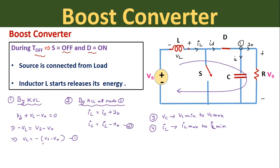Applying KVL during the OFF period gives: Vs + VL − V0 = 0, so VL = Vs − V0 (equation 1). Applying KCL at node 1 gives: iL = iC + i0, so iC = iL − i0 (equation 2). The inductor current decreases from iL_max to iL_min as it releases energy, and the capacitor voltage increases from Vc_min to Vc_max as it charges.